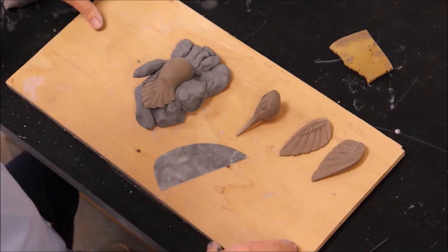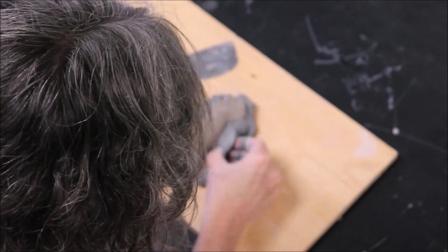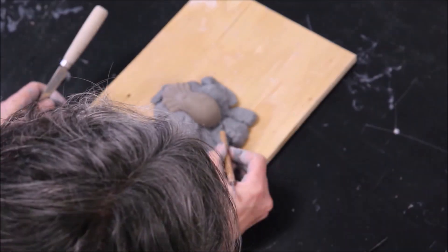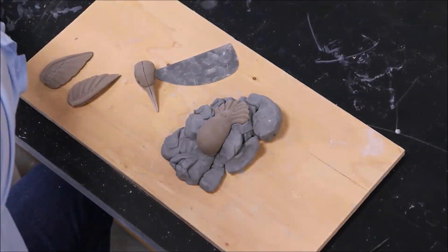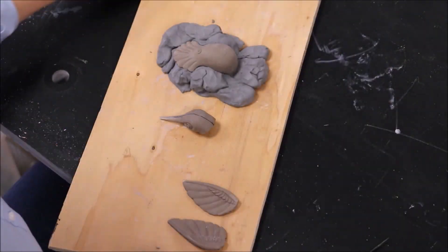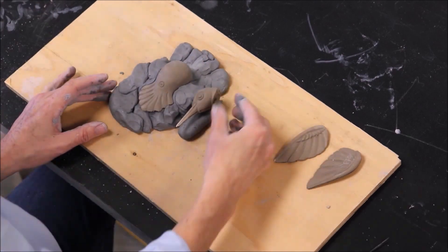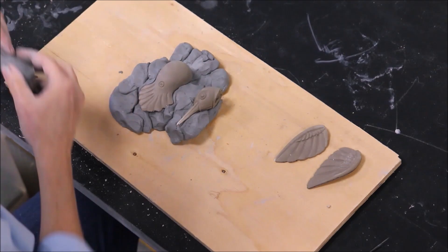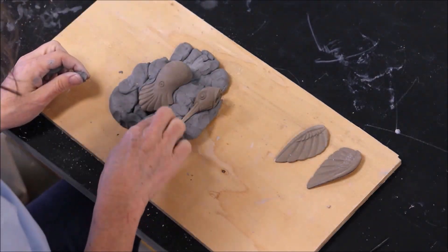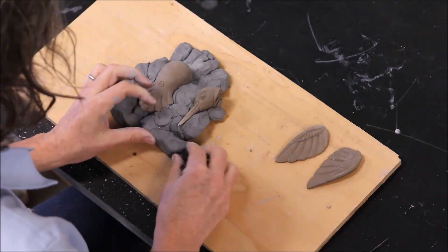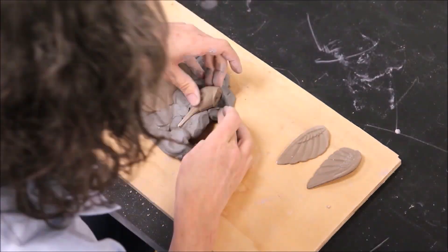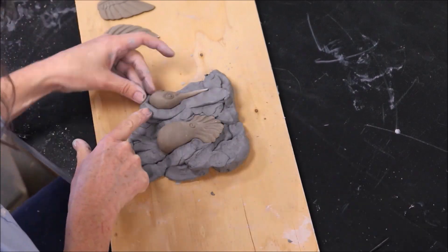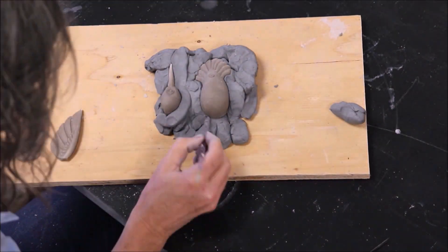You'll notice I'm using two different clay bodies here, and the main reason I do that is it makes it a lot easier to see what I'm doing. Since the hummingbird is a different color than the clay bed, I can really see where that divide line is and make sure I'm digging into the clay bed and not digging into the hummingbird. The hummingbird is greenware, so it's raw clay that's not been fired, and it is slightly fragile and delicate, so I do need to be careful.